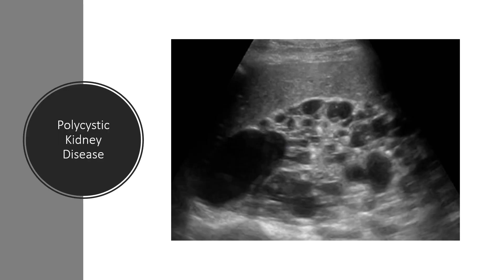A cystic kidney disease that you may run into while scanning patients in the emergency department is adult polycystic kidney disease, or APKD. This will manifest as enlarged kidneys with multiple cysts of variable shape and size. APKD is defined as the presence of multiple renal cysts, and if greater than three to four cysts are encountered, the patient warrants further urologic workup.